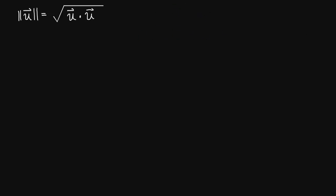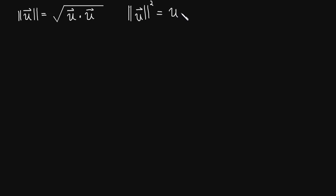Notice also that this is a pretty natural follow-up: the length of a vector squared is equal to the vector dotted with itself. We just squared both sides.